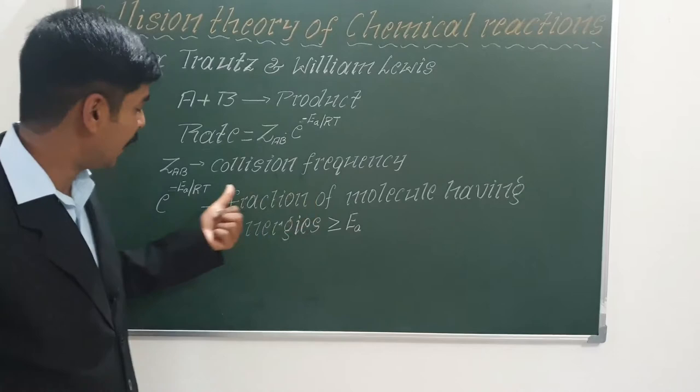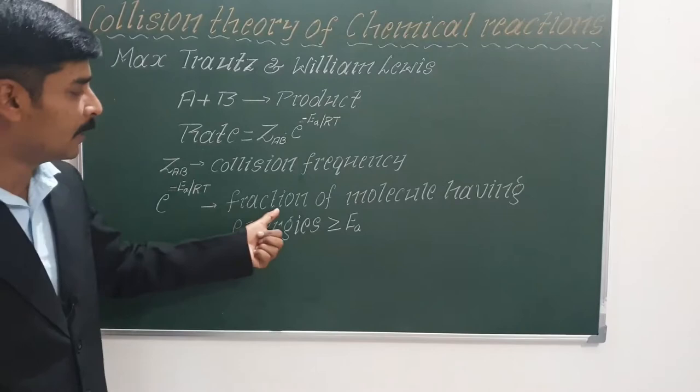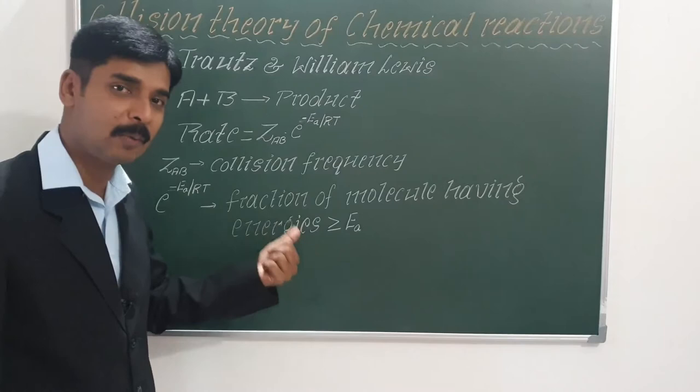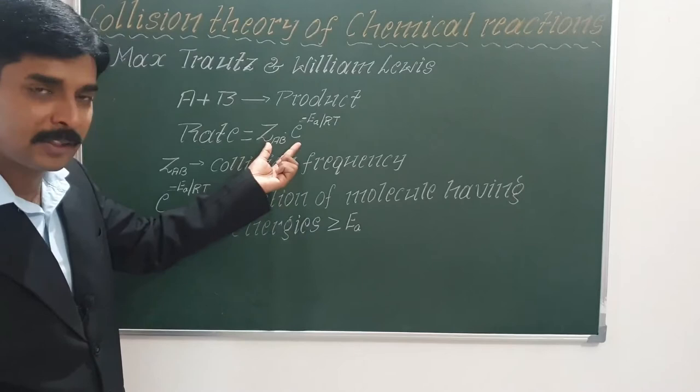The term e to the power minus Ea by RT is called the Boltzmann factor, and it also represents the fraction of molecules having energy greater than or equal to activation energy. Only those molecules having energy equal to or more than activation energy, when they collide, will lead to reaction. These are the two factors which decide the rate of a reaction.